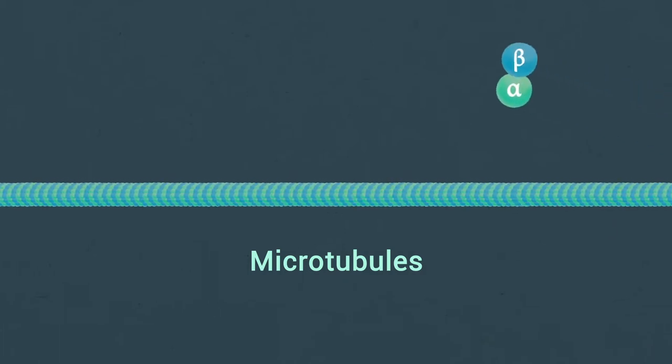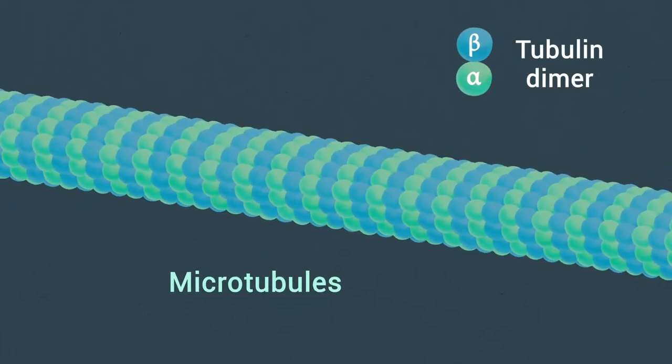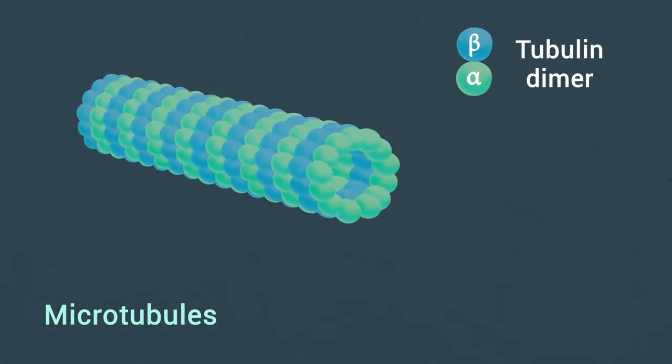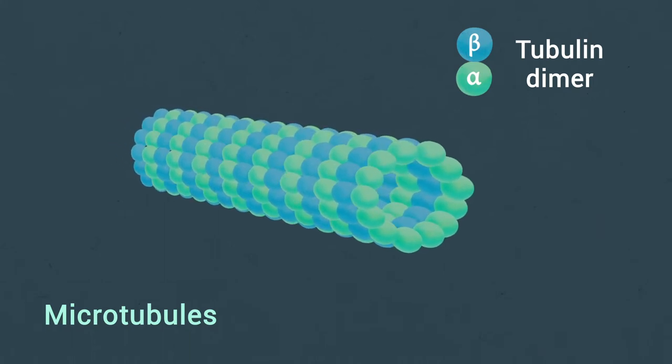Microtubules are formed by the assembly of alpha-beta tubulin dimers into protofilaments that associate laterally into hollow tubes.